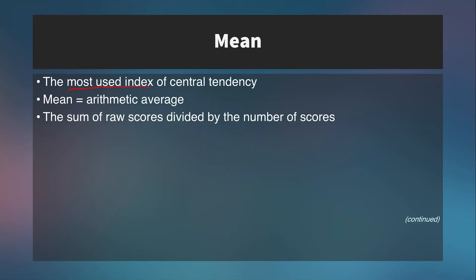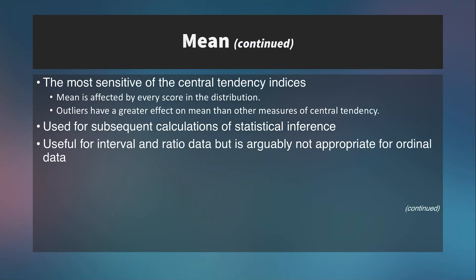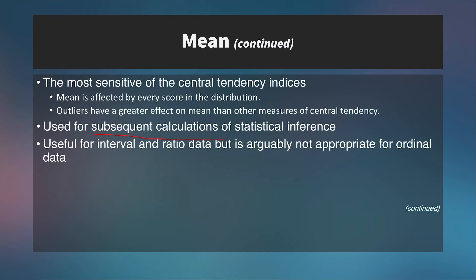The mean is the most often used index for central tendency. It's equal to the arithmetic average — the sum of raw scores divided by the number of scores. It's the most sensitive of the central tendency indices, meaning it's affected by every score in the distribution. Because you add all scores together, every single score has an effect — even huge outlier scores way out at the extremes are added in and pull the mean toward them. The mean is also used for subsequent calculations of statistical inference; just about every statistical analysis in this class will use the mean in some way.